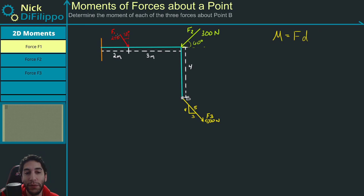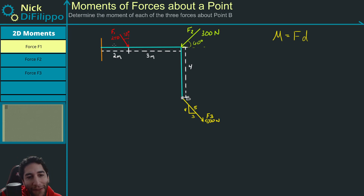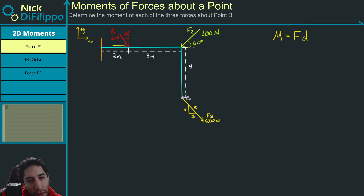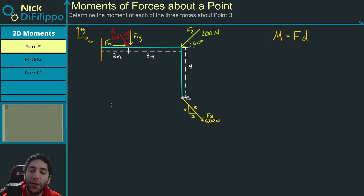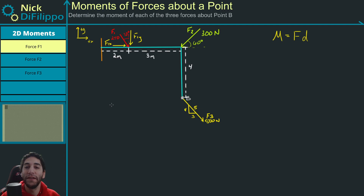We want to look at each of these forces individually — F1, F2, F3 — and figure out what each of their moments are. Let's start with force F1. F1 is in the XY plane, so this will be my positive X direction and up will be my positive Y direction. F1 has an X and Y component, so we need to break it up and look at what F1X and F1Y are. Then we add them together to get the moment that the entire force produces.